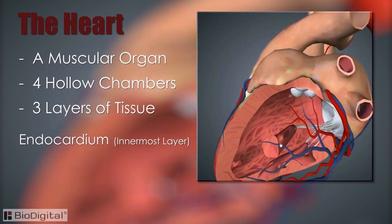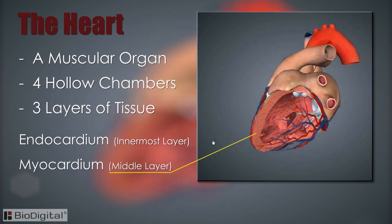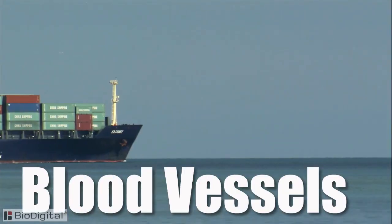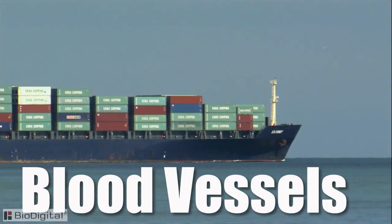The heart is also made up of three layers of tissue. The innermost layer is the endocardium, which is the thin smooth membrane that lines the inside of the chambers of the heart and forms the surface of the valves, of which there are four. Next is the myocardium, which is the middle layer — the muscular wall of the heart, or heart muscle. Third is the pericardium, a tough double-layered fibrous sac which covers the heart.